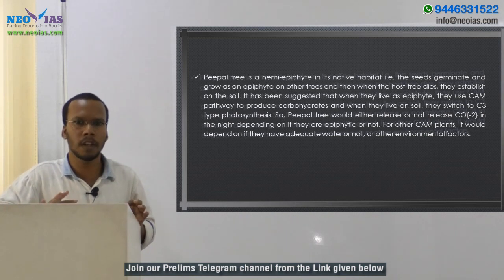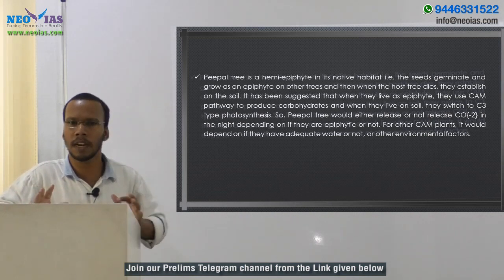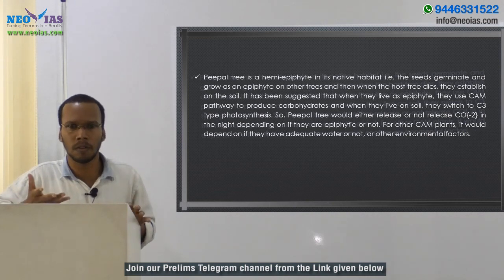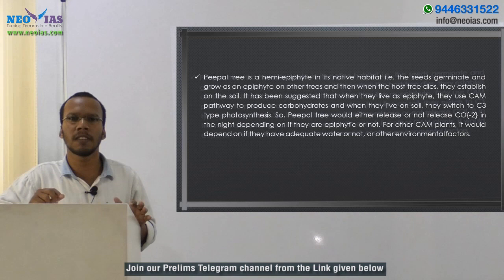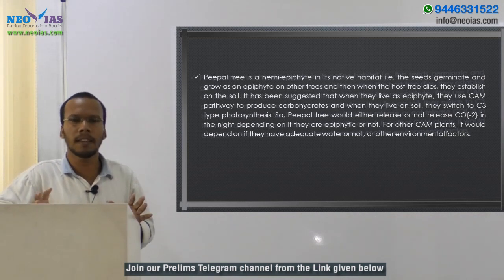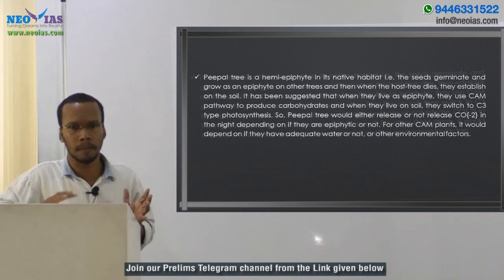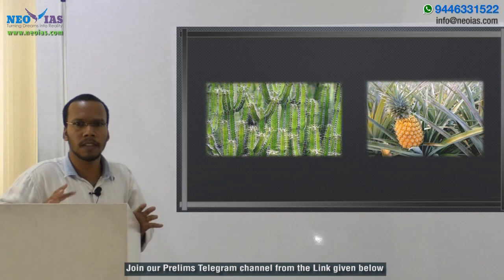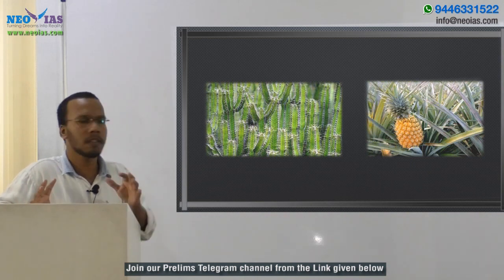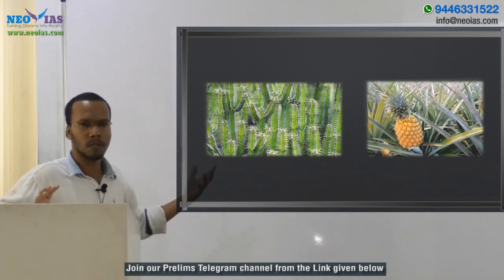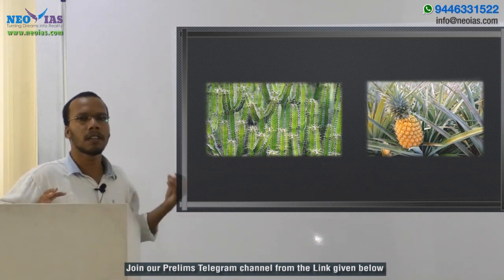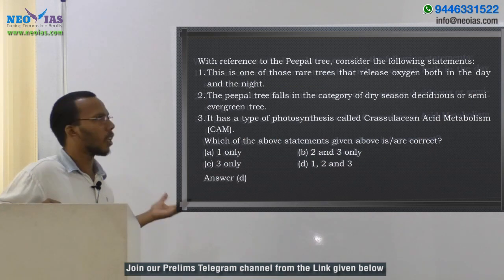So the peeple tree has a different mechanism known as Crassulacean Acid Metabolism. Two common examples of plants exhibiting CAM are cacti and pineapple. Most desert plants have this Crassulacean Acid Metabolism.